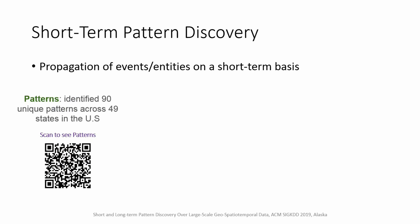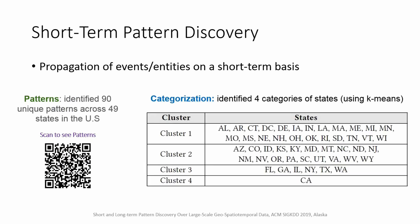Using these patterns, we were able to identify four categories of states based on how traffic events propagate and how weather impacts traffic flow.